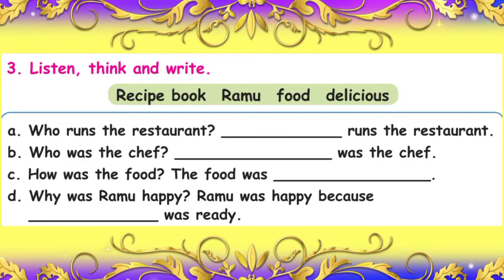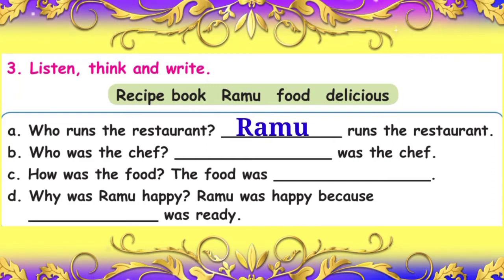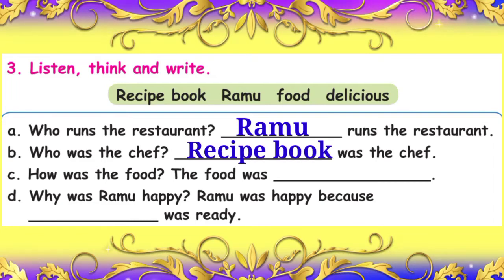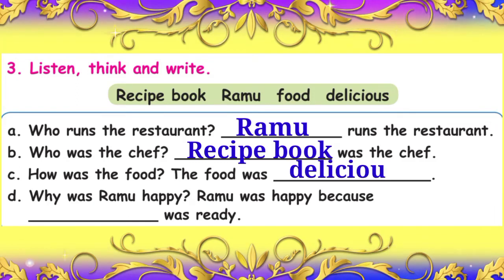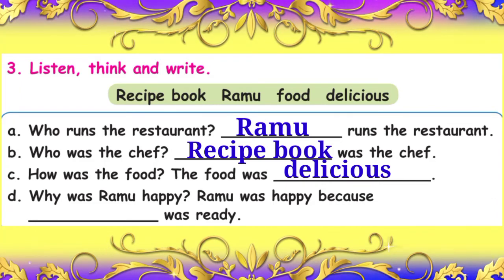Let's proceed. Think and write: Who runs the restaurant? Yes, Ramu runs the restaurant. Question B: Who was the chef? In the lesson, who was the chef? Yes, the recipe book was the chef — the answer is the first option. Question C: How was the food? Yes, the food was delicious — the answer is the last one. Why was Ramu happy? At last, Ramu was happy because the food was ready.